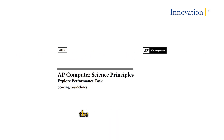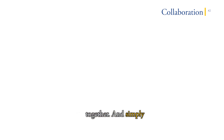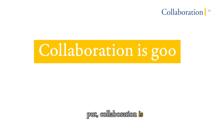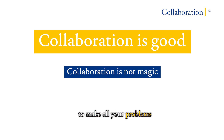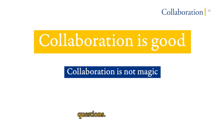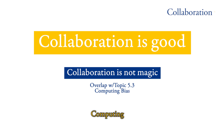Computing innovations used to be a topic of the APCSP Explore task, which thankfully you don't have to do anymore. The second thing you need to know for Topic 1.1 is the concept of collaboration, or the idea of working together. Simply put, collaboration is good — you need to remember that. At the same time, collaboration is not magic and it's not going to make all your problems go away. In questions about collaboration, you'll see a lot of overlap with Topic 5.3, computing bias.